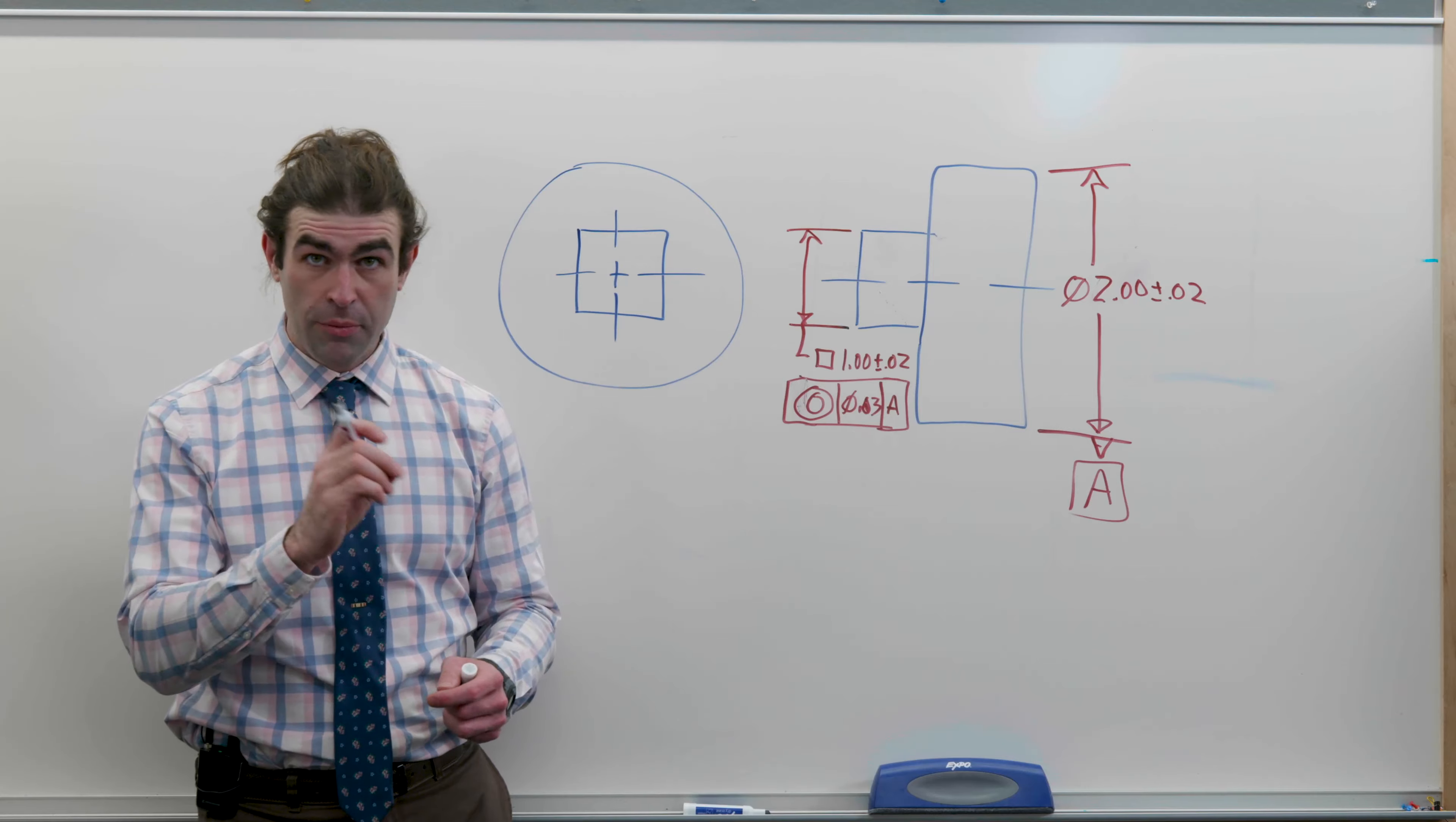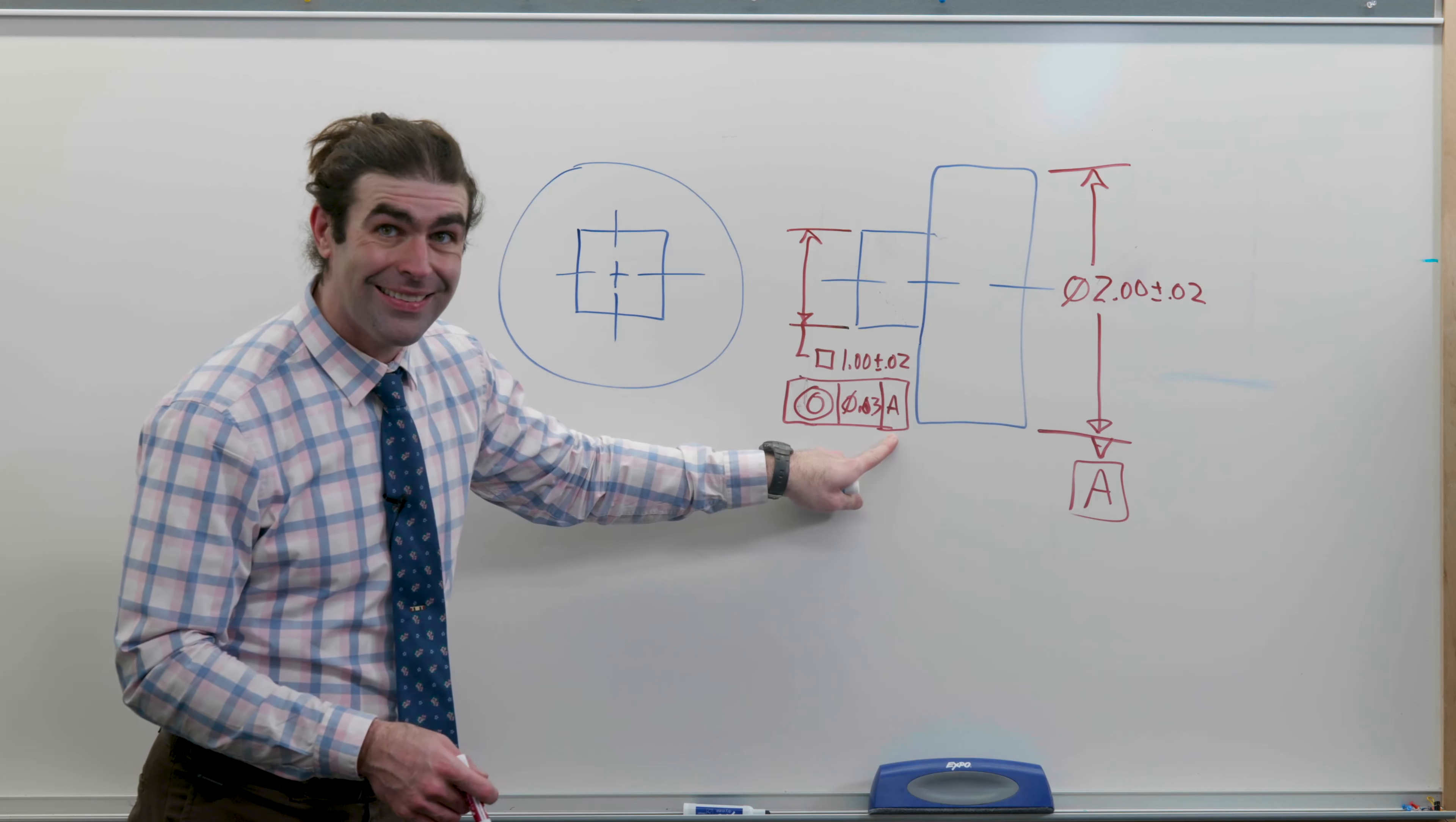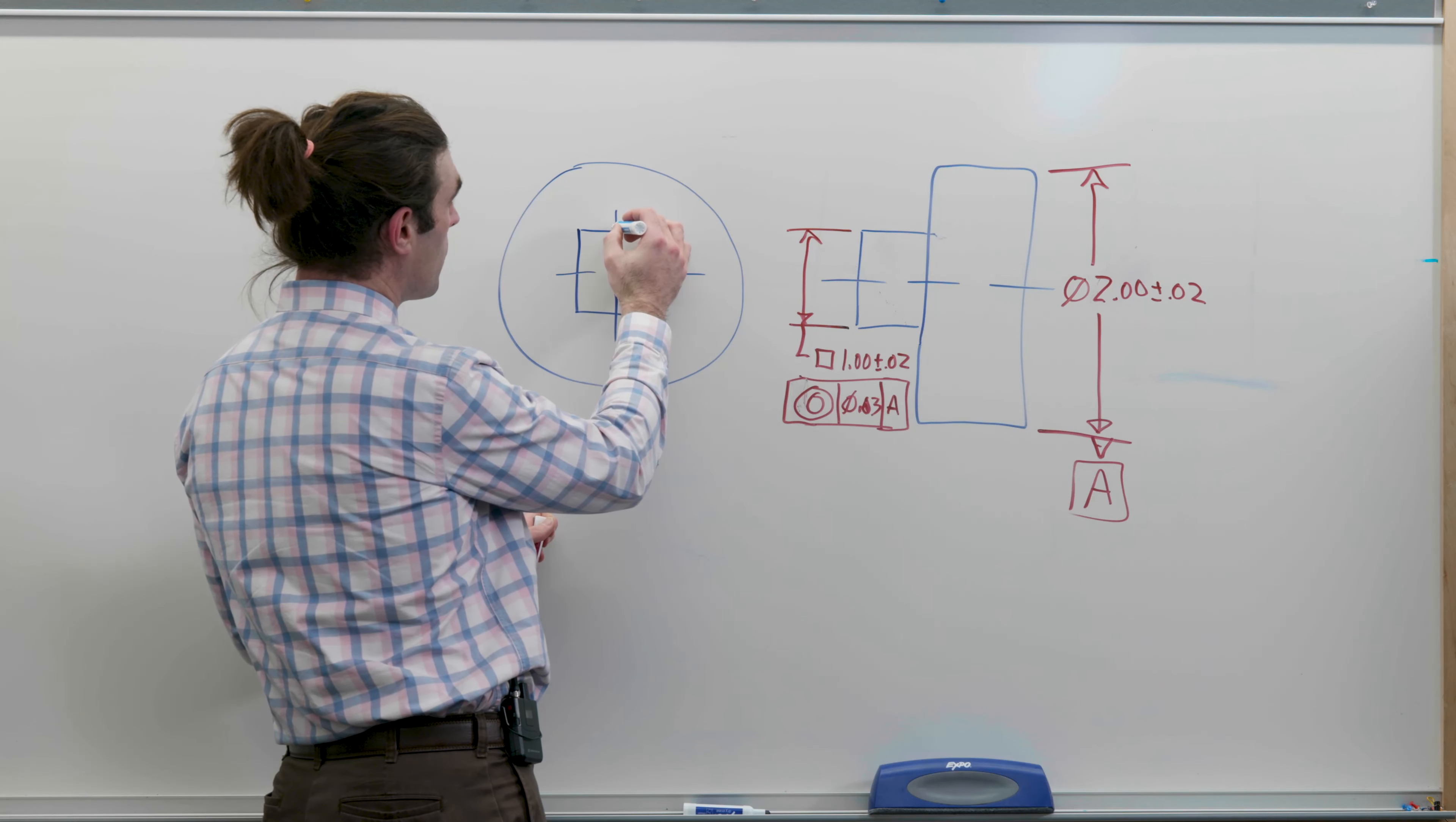With derived median points of diametrically opposed elements, you don't have to have a circular feature to be concentric. Why? Well, if we have this square feature—we're saying a square of one inch is concentric to datum A. Now, I know it looks wacky, but it is allowed, or it was allowed. Of course, 2018 and on, you're not supposed to use this.